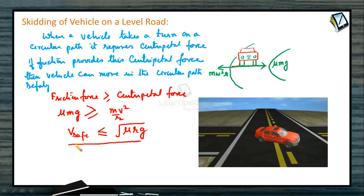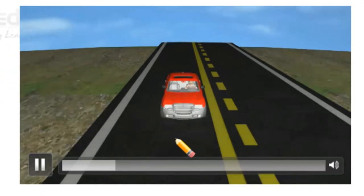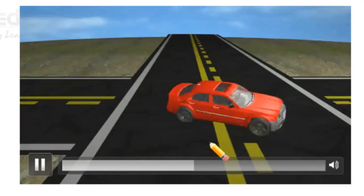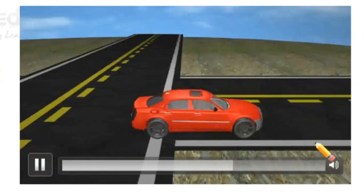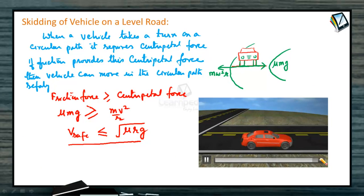If the vehicle travels at this safe speed on a level road, it can negotiate the curve without any problem. If the speed of the vehicle exceeds this safe speed, there will definitely be skidding. So the friction force must be sufficient to negotiate a curve, otherwise the vehicle is going to skid.